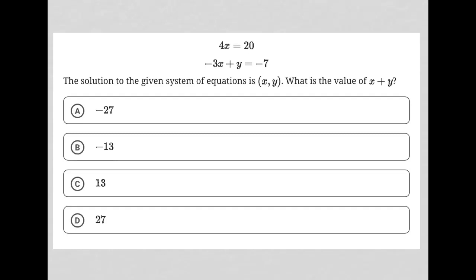This question starts off by providing us with this system of equations. We have 4x equals 20 and negative 3x plus y equals negative 7.